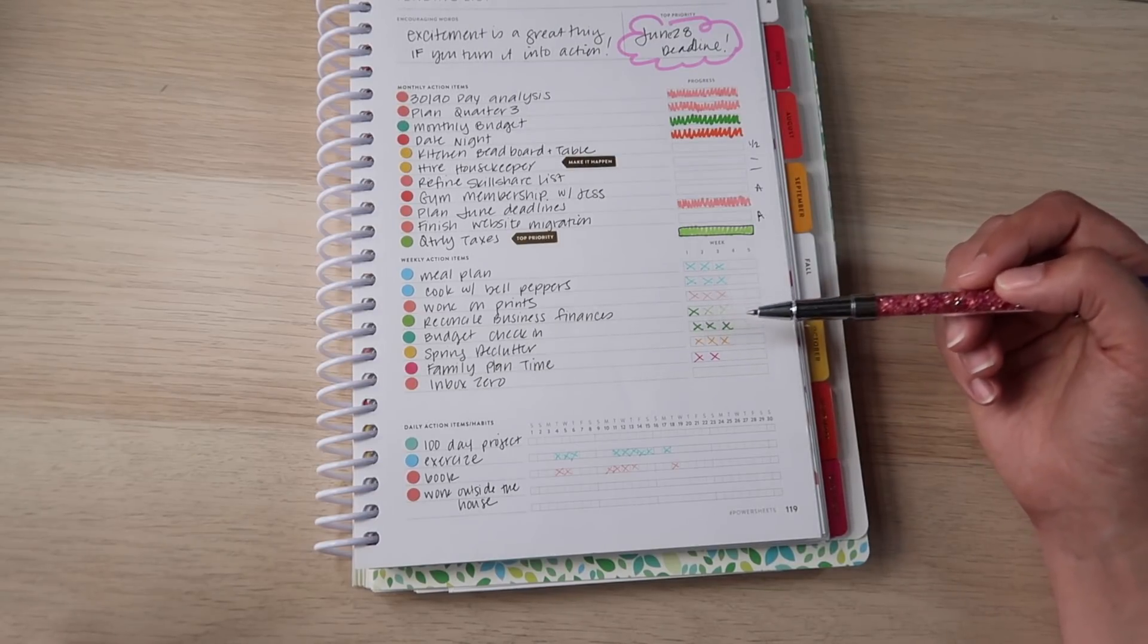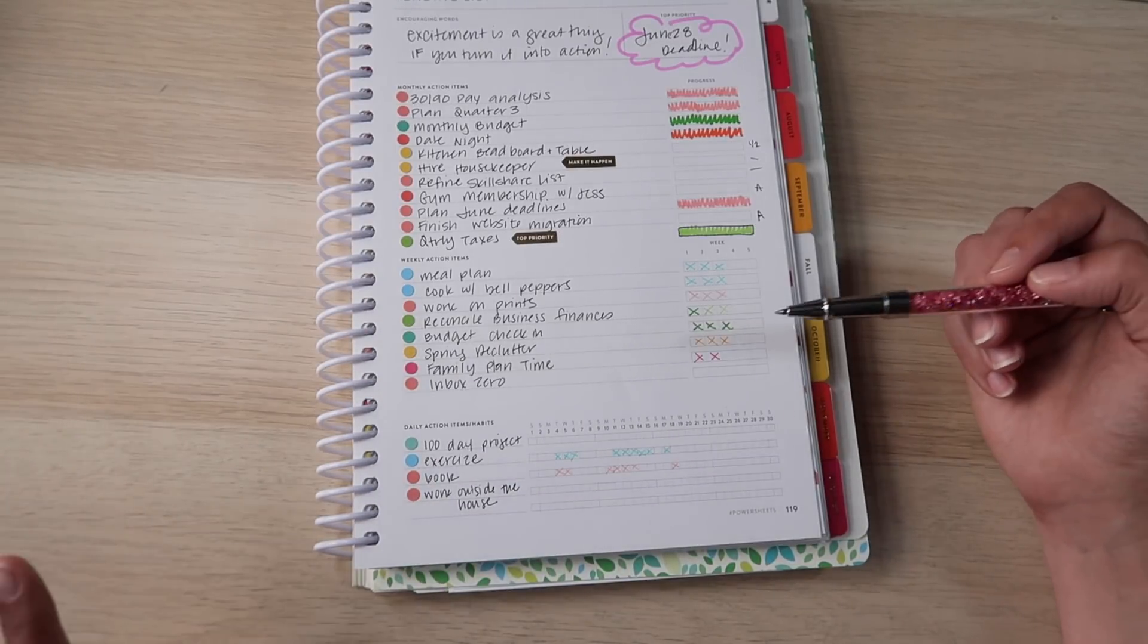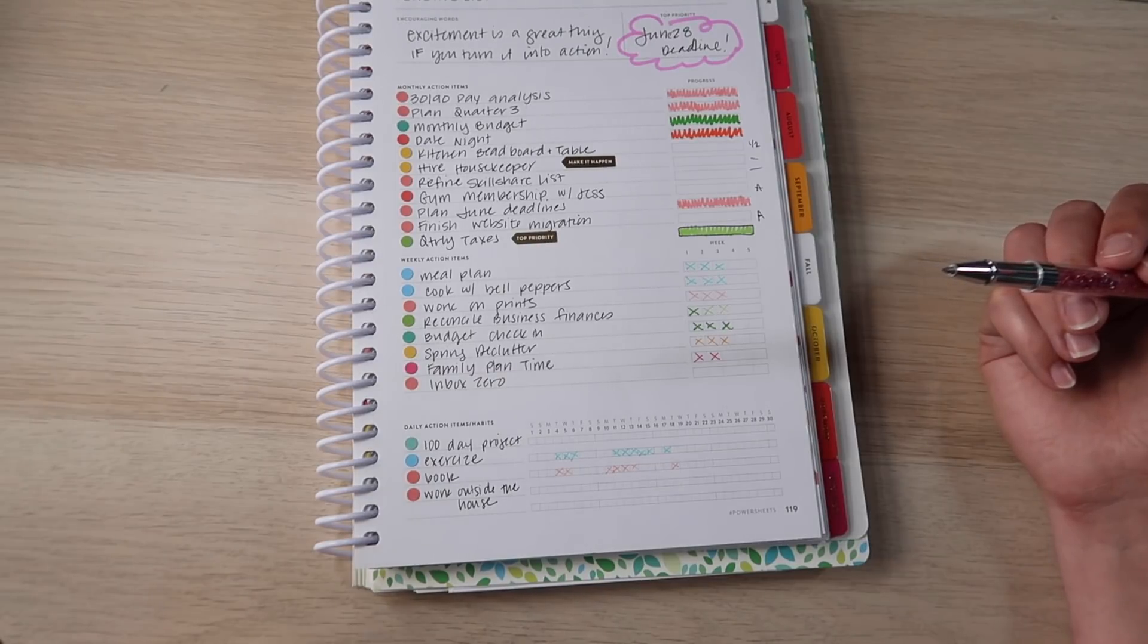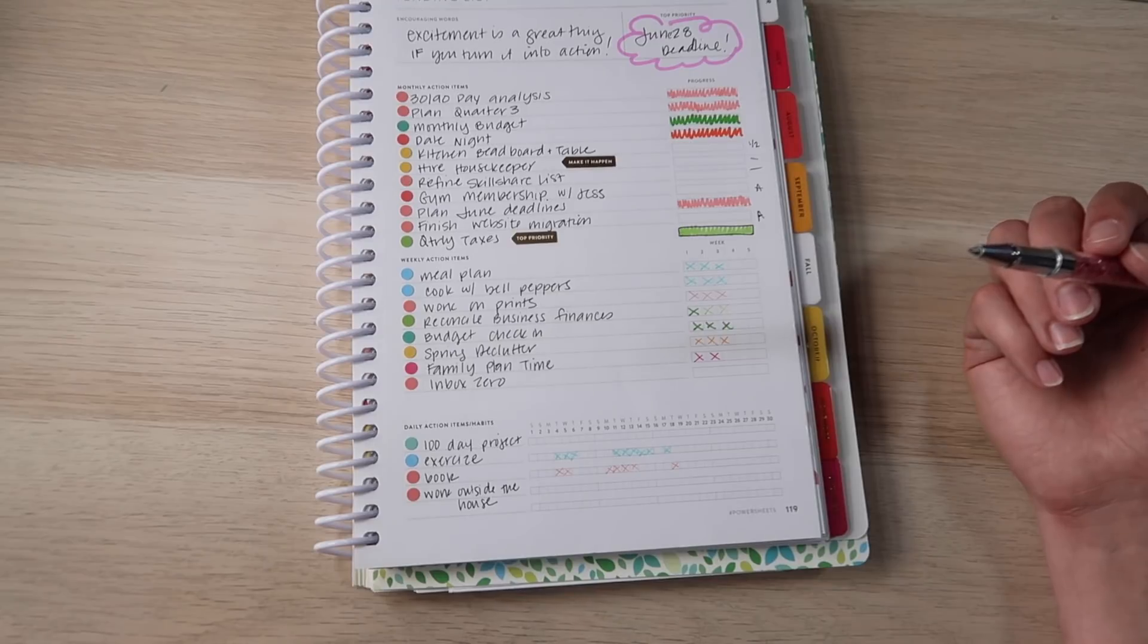Notice with the finances, both business and budget, I have been on top of those for the first time since the beginning of the year. Spring declutter has been going well. We actually did a lot of the work in the garage, which was really exciting. Family plan time, we did twice. And then this last week, not so much.